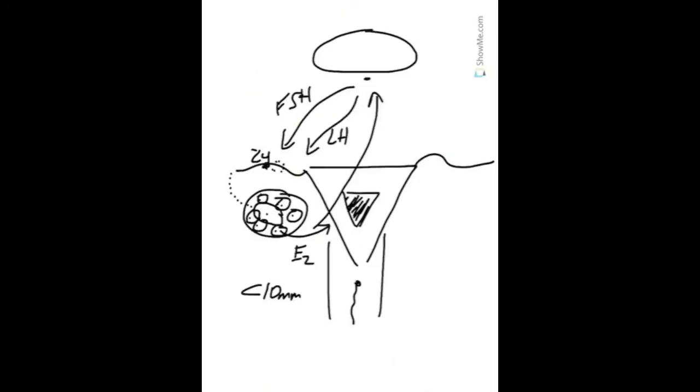That embryo will live in the fallopian tube for 5 days, after which it's transported into the uterus. If it avoids detection by your immune system and attaches to your blood supply, it will start producing HCG, or pregnancy hormone. And this will disrupt the cycle from happening again.